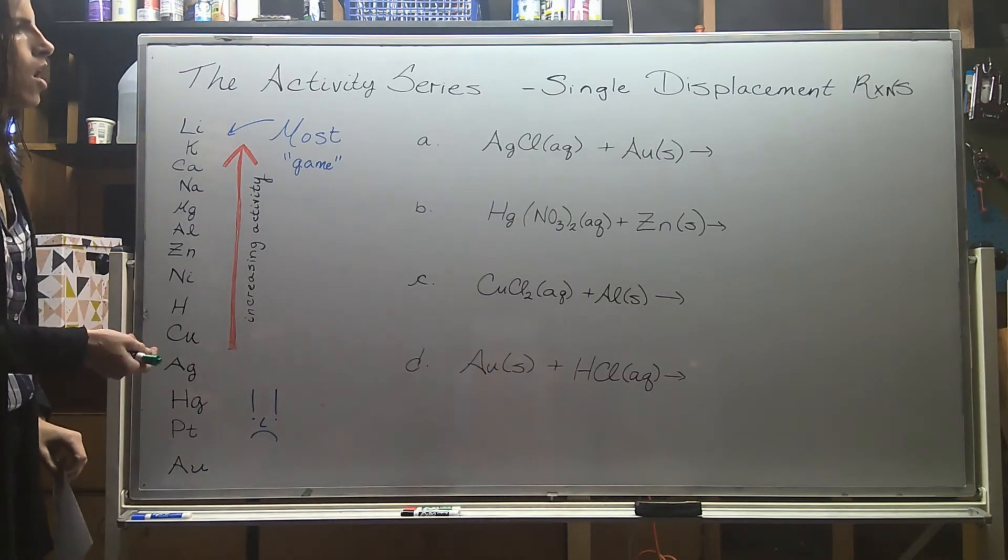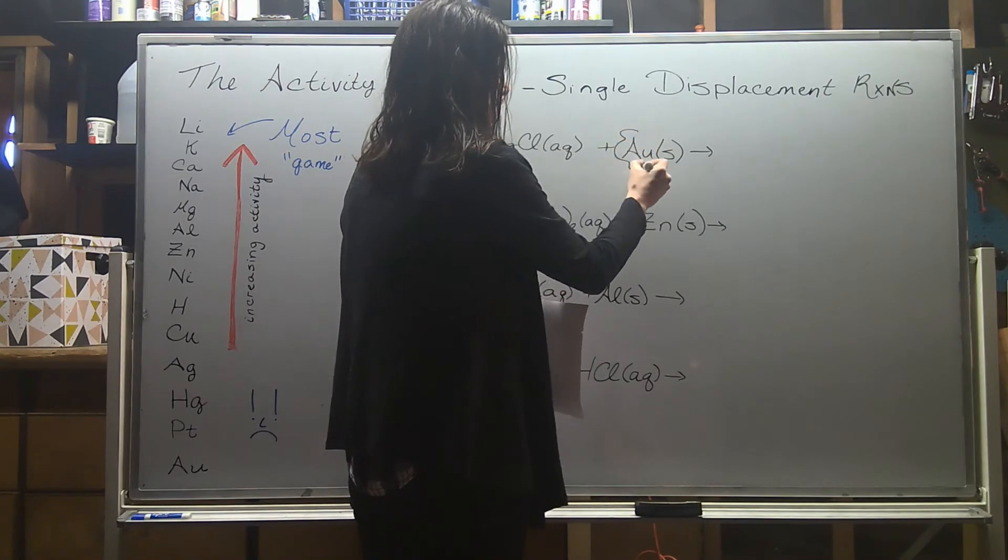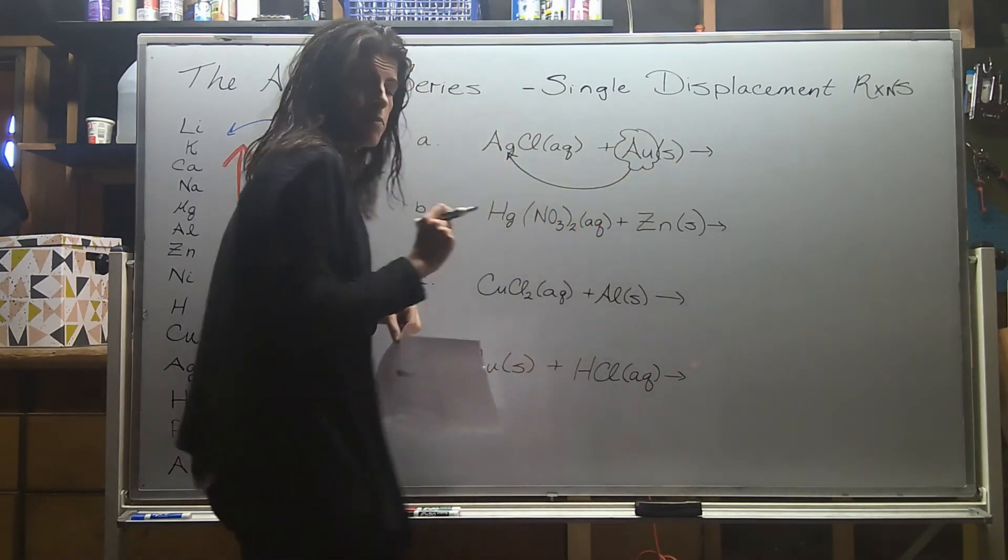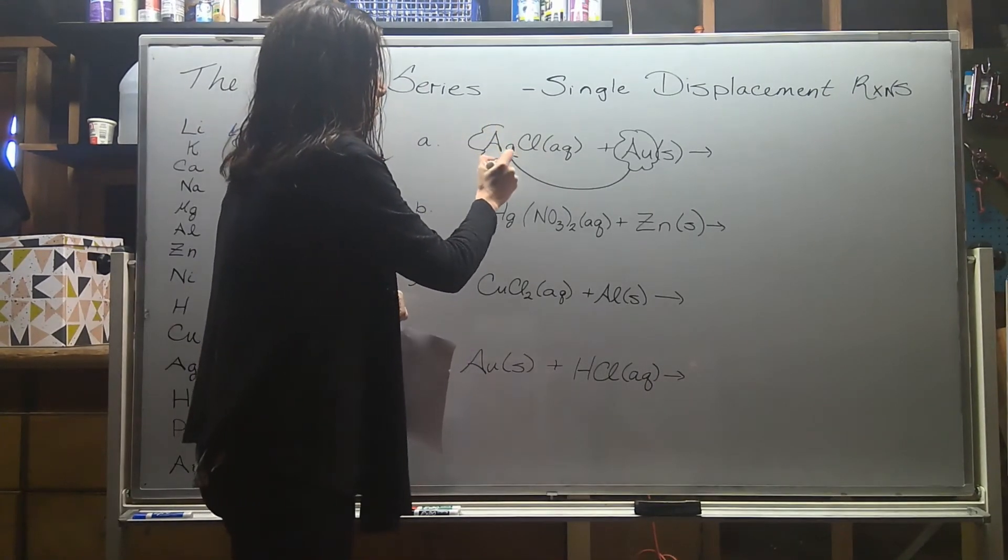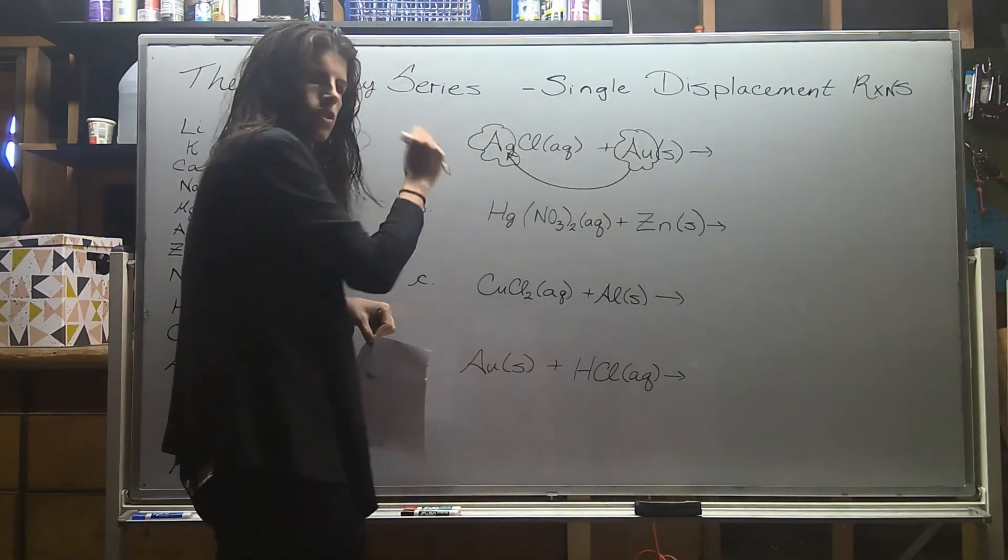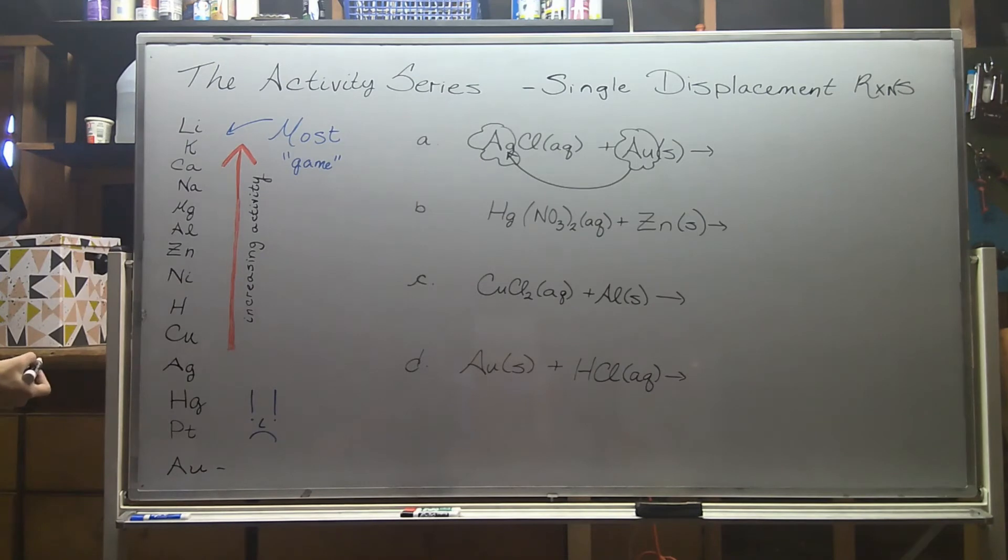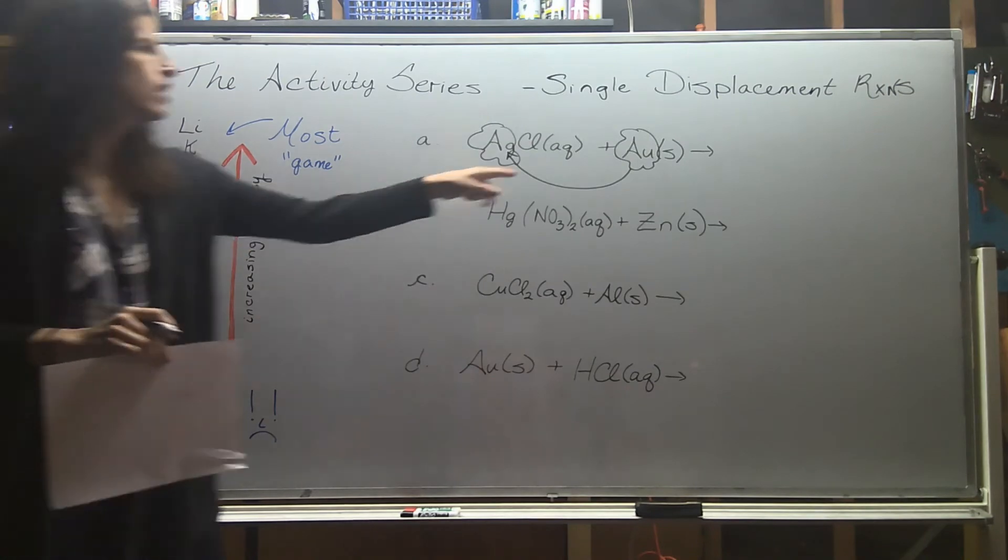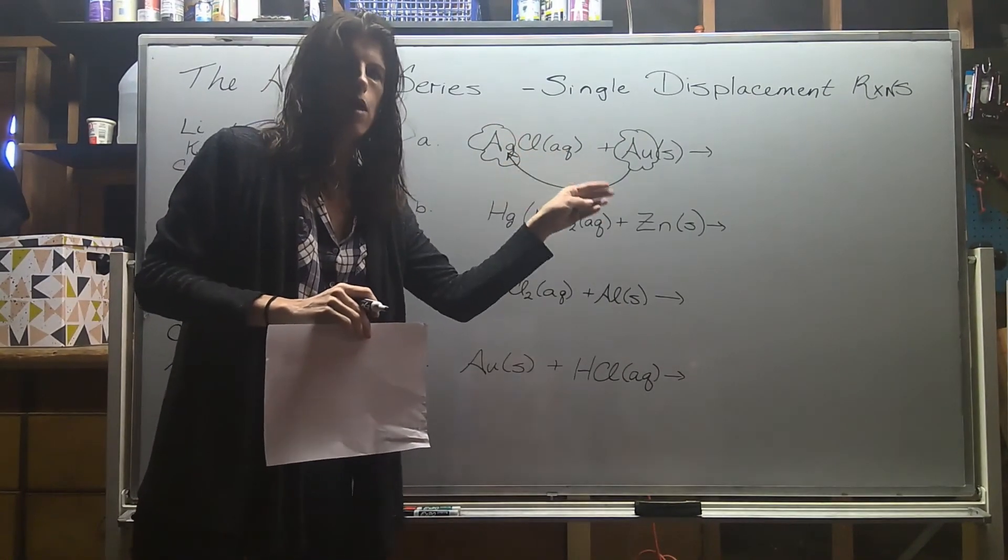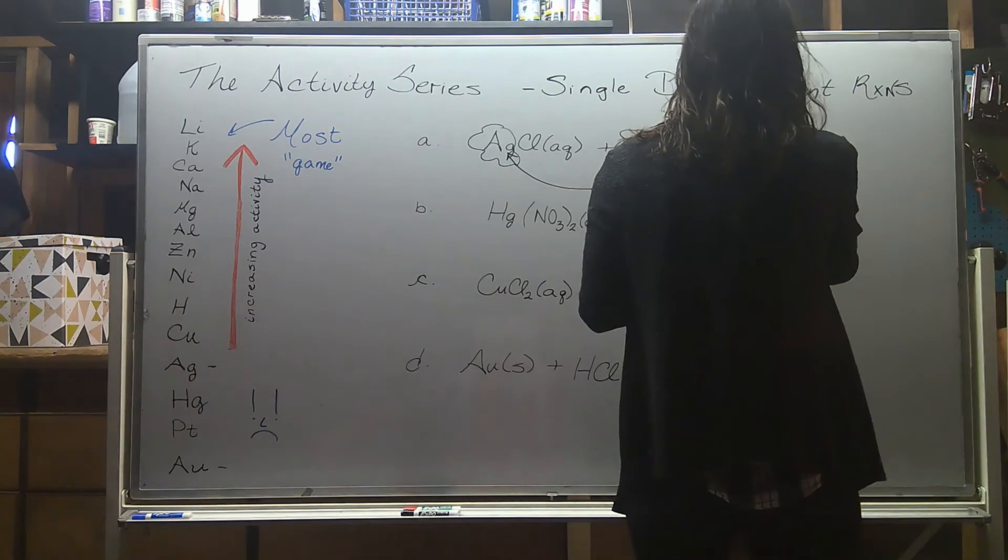So we want to identify who's going to displace who. So in this first example, gold can potentially come in, if something was going to happen, it would be displacing the silver. So a pattern that you're going to see a lot is the metal potentially displacing the metal. Now we got to see if it's going to happen. So gold is down here all the way at the bottom and silver is pretty low, but silver is higher than gold. And so that means silver has more game and isn't going to be displaced by gold. Gold isn't powerful enough. Gold doesn't have enough activity to break up this relationship. So this one's going to be a no reaction kind of situation.